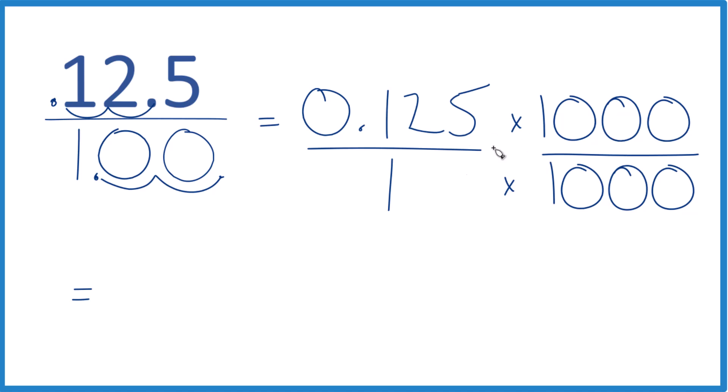0.125 times 1000 is 125, and 1 times 1000 is 1000. Now we have whole numbers, so we can simplify this.